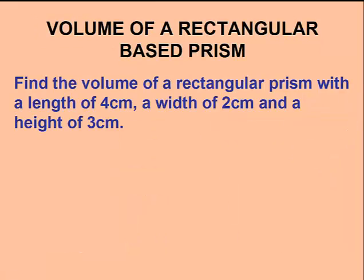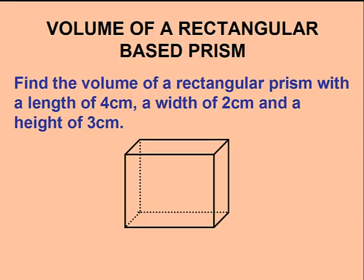First, we'll find the volume of a rectangular base prism having a length of 4 cm, a width of 2 cm, and a height of 3 cm.